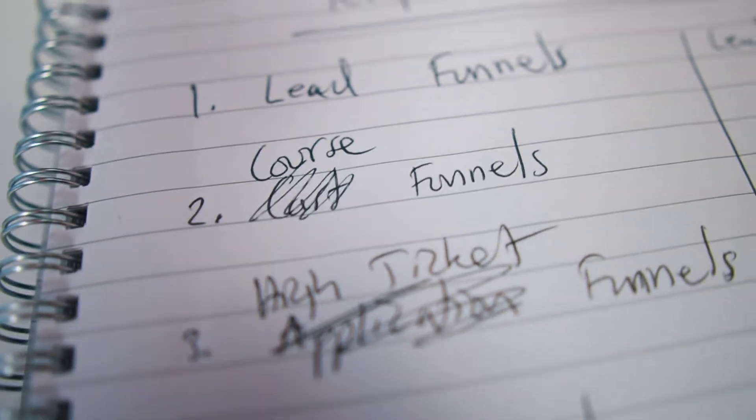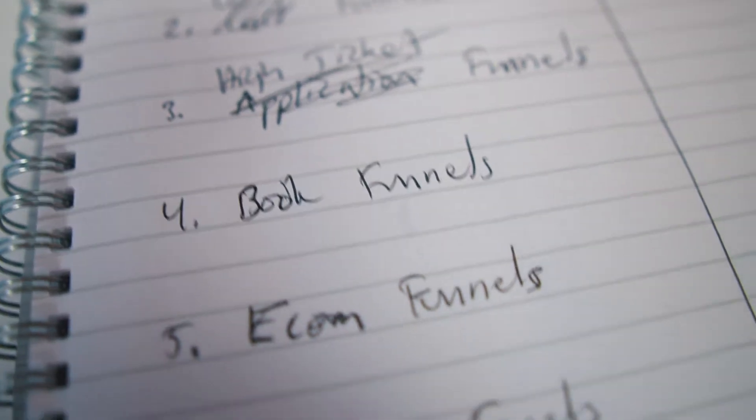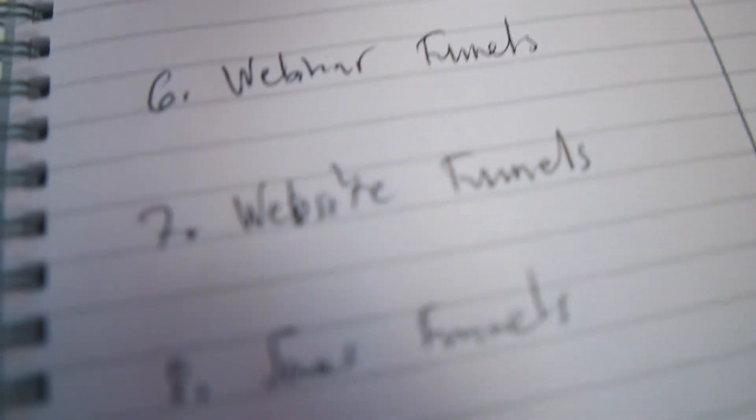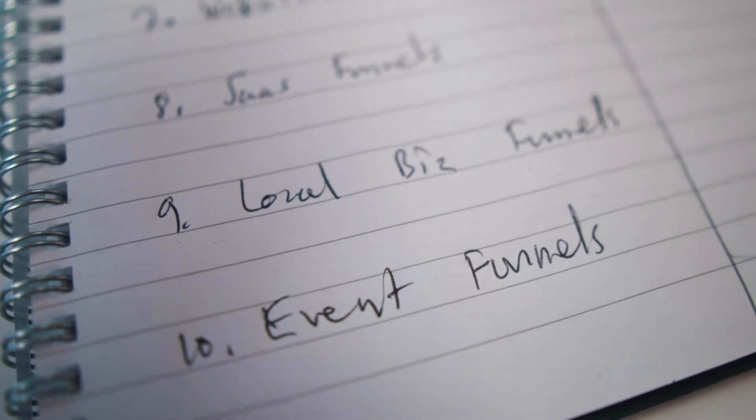First thing I'm doing is listing all 10 different types of funnels that we're building. As you can see here, we've got lead funnels, course funnels, high ticket funnels, book funnels, e-com funnels, webinar funnels, website funnels, SaaS funnels, local business funnels, and event funnels. This gives me the structure — I know what people need and can make sure we have at least three to ten funnels of each type.